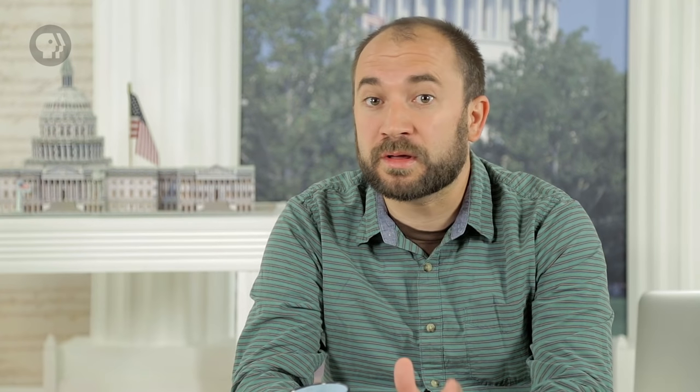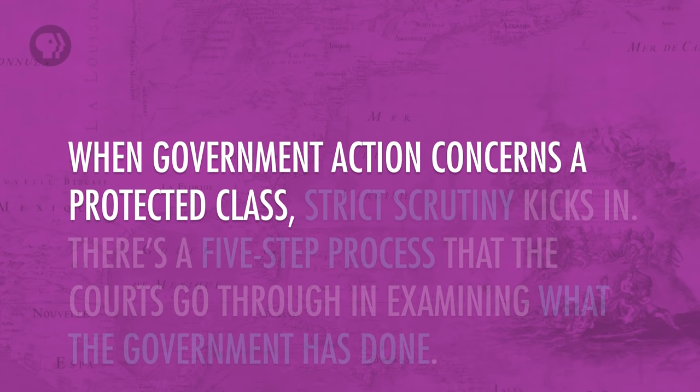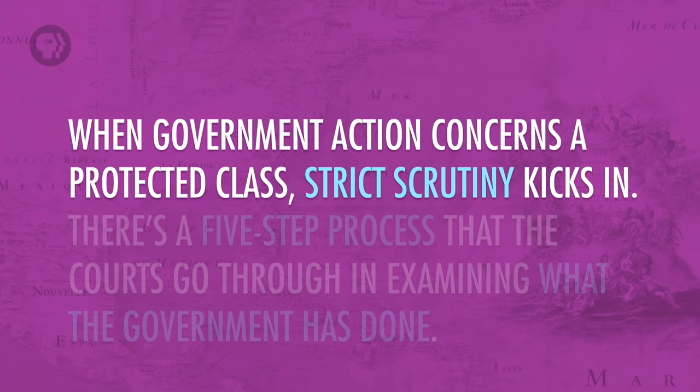That footnote talks about situations that call for a more searching judicial inquiry. This is known as the level of scrutiny that the courts will apply, and it's not strictly limited to equal protection cases. The highest level of scrutiny is called strict scrutiny — the government will have a heavy burden to prove that the law or action in question is allowable. When government action concerns a protected class, strict scrutiny kicks in.